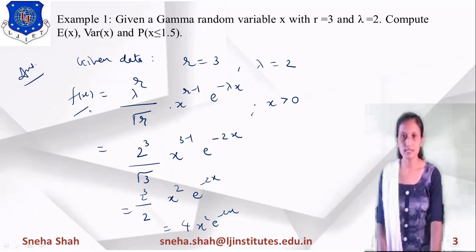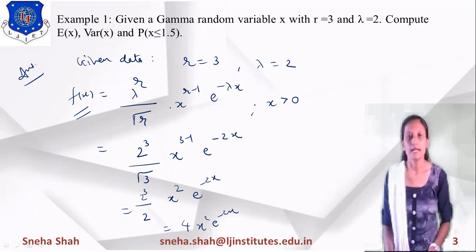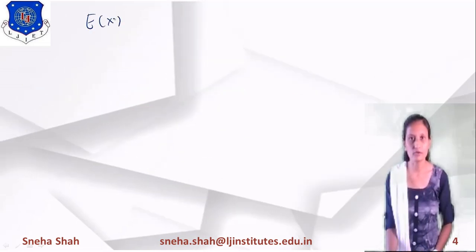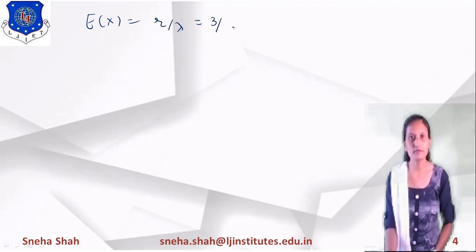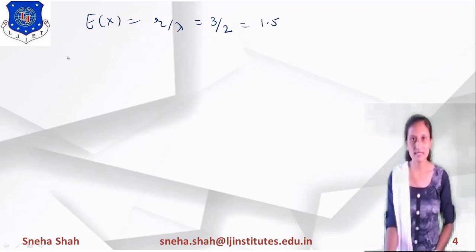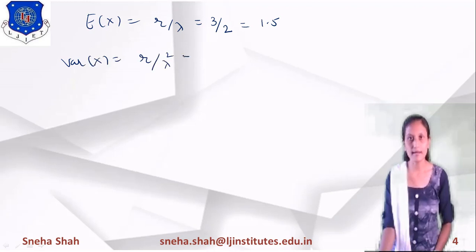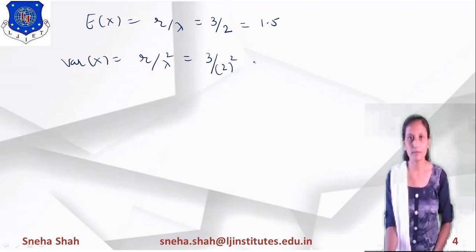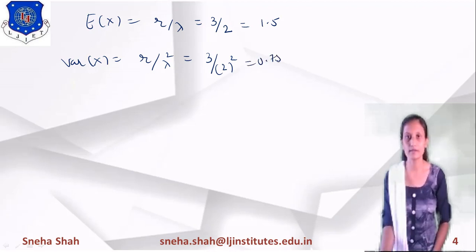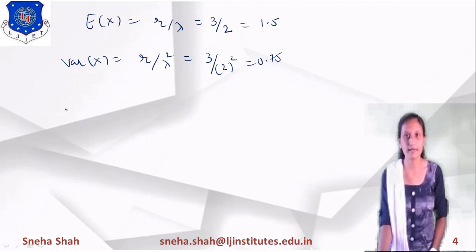Using this f(x), we find all required values. First, E(x) — the mean — uses the formula r/λ. With r = 3 and λ = 2, the mean equals 3/2 = 1.5. For the variance of x, the formula is r/λ². With r = 3 and λ² = 4, the variance equals 3/4 = 0.75.